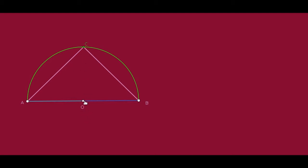Join the two points C and O. Now let's look at two triangles. The first triangle is AOC. In triangle AOC, two angles are equal because these two sides OA and OC are equal. O is the center, OA is a radius, and OC is another radius. The radii of the same circle are equal, so OA equals OC.